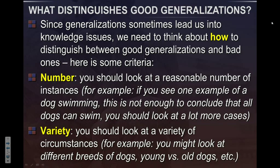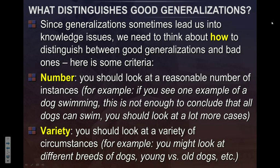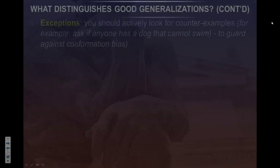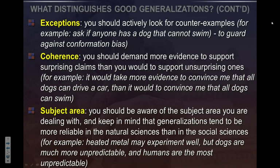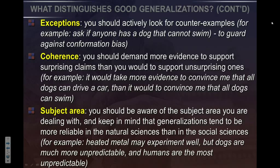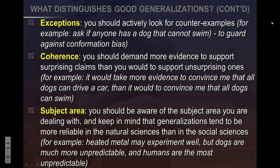Second is variety — you see different breeds of dogs swim, old dogs, young dogs, different colors of dogs. The variety of dog doesn't matter; the generalization still seems to apply. Another criterion is exceptions — how many do you have? Maybe you encounter one dog who can't swim, but it's just one exception. But if the exceptions keep increasing, like with my chair color example — red chair, yellow chair — how many exceptions do you accept before you give up your generalization?